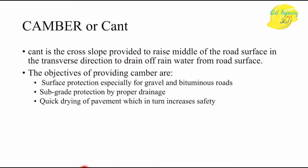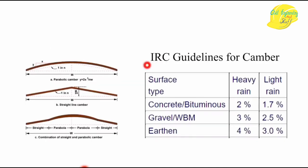The objectives for providing camber include surface protection: when potholes form and water accumulates, it destroys the bonding between bitumen and aggregate, leading to failure of that section and premature pavement failure. Camber also protects the subgrade and helps in quick drying of the pavement. The types of cambers provided include straight cambers, parabolic cambers, and a combination of straight and parabolic cambers.